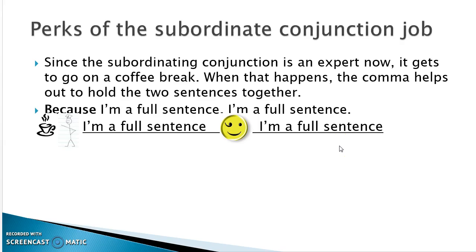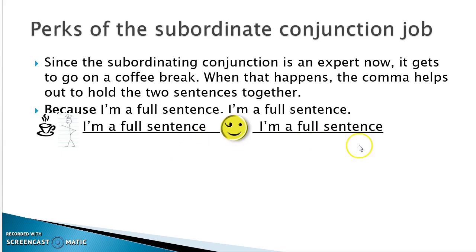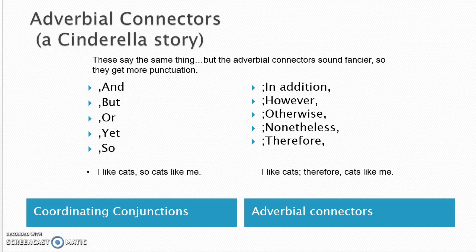Because you're a subordinating conjunction and have been doing this a while, you get to move around — managers rove. So the subordinating conjunction can move to the front. When it's not in the middle, the comma has to run over and help. So when the subordinating conjunction is at the beginning, you get: '[Subordinating conjunction] I'm a full sentence, I'm a full sentence.' That's what that structure looks like.